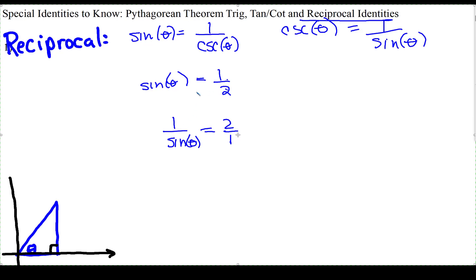So as soon as we flip these to their reciprocals, 1 over sine, well, 1 over sine can be replaced. We can now say cosecant theta is equal to 2.